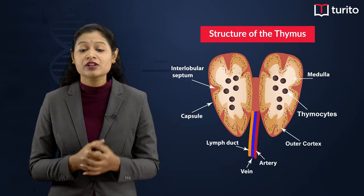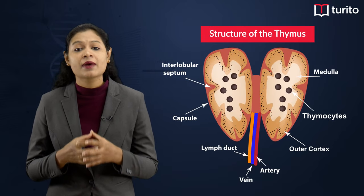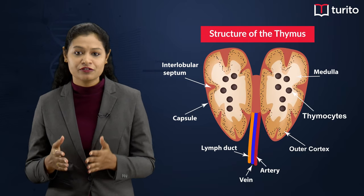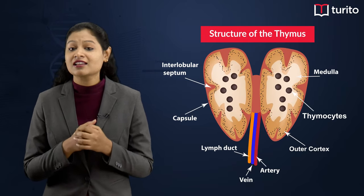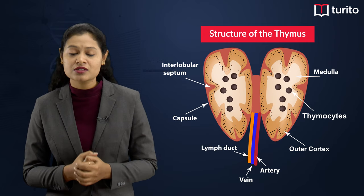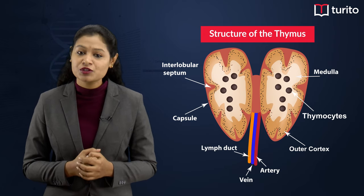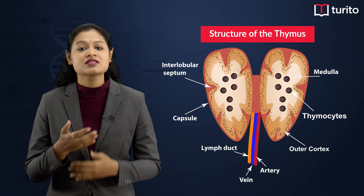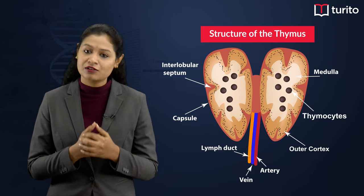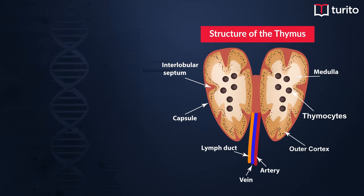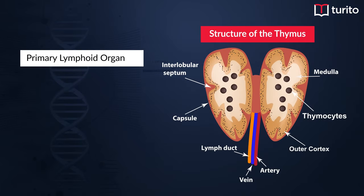The thymus gland grows to its maximum size till the age of 15 and later undergoes atrophy, because of which we see a decrease in the lymphoid content. The thymus gland is also called the primary lymphoid organ.